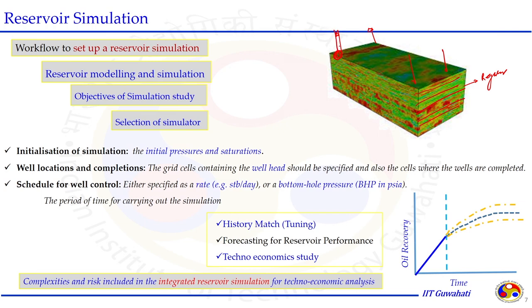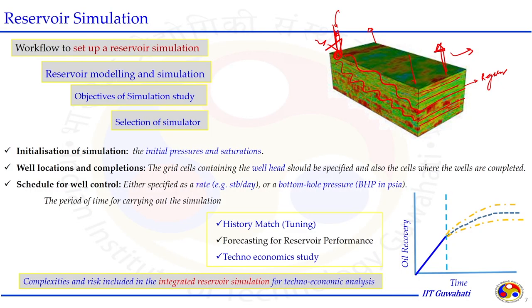Consider one injection well and one production well. In this secondary or tertiary recovery process, the injected fluid passes from the injection well toward the production well because of the pressure difference. The pressure will be distributed between the injection and production wells. The distribution of porosity, permeability, and water saturation will provide more accurate information. We can develop the simulator in terms of size, physical properties, geological properties, fluid properties, and well-rock properties.